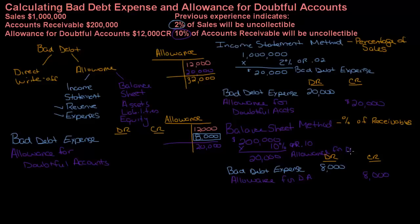Can you see the difference between the two methods? With the balance sheet method, my balance can never go higher than the amount that I calculate for my allowance for doubtful accounts. That's kind of nice because we don't need to monitor the balance as much. Now let's take this one step further and sauce this up a bit.